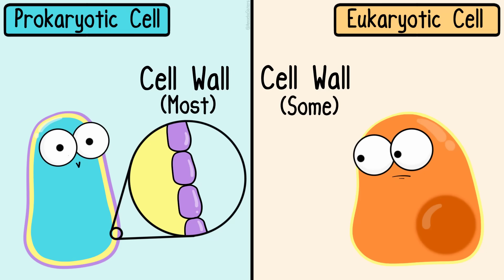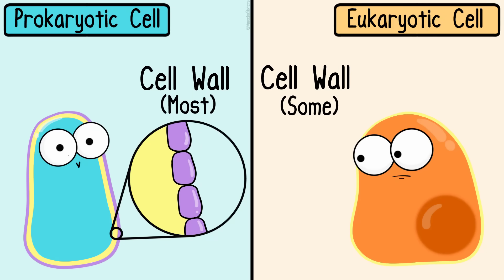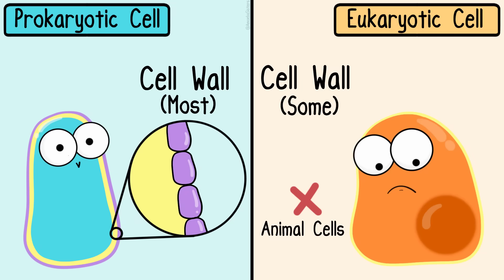All cells have a cell membrane. As for cell walls, most prokaryotic cells have cell walls. Many eukaryotic cells — plant cells and fungal cells, for example — can have cell walls. But there are plenty of eukaryotic cells that don't have cell walls, such as animal cells.